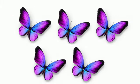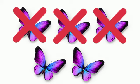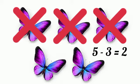There are 5 butterflies in the garden. If 3 butterflies fly away, how many will remain? Yes, 2. So, 5 minus 3 is 2.